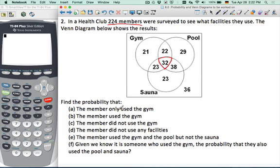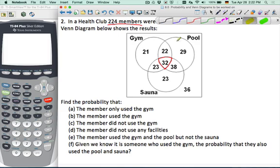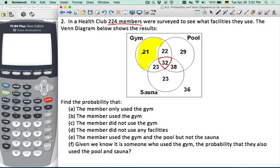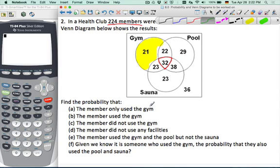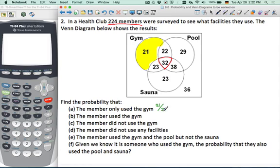Find the probability that the member only uses, only use the gym, the gym and nothing else. It's just this yellow bit that Mr. Song's shading here. So there are 21. We don't need to add these all up because the clue is in the problem at the top. We can assume that all the information is given. So 21 out of 224.